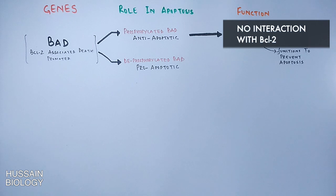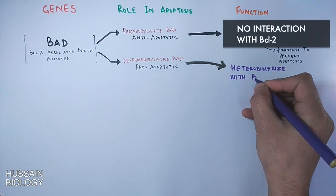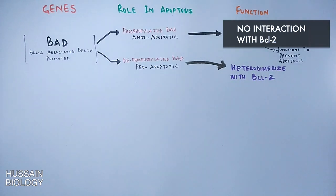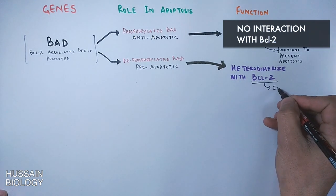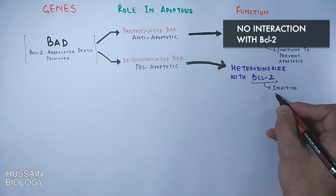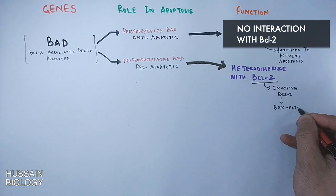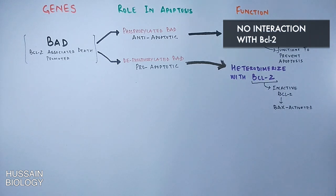In the case of dephosphorylated BAD, the BAD heterodimerizes with BCL-2 protein and renders BCL-2 in its inactive form. When BCL-2 is inactive, the BAX protein is activated and it initiates apoptosis by releasing cytochrome c and other pro-apoptotic factors from the mitochondria.